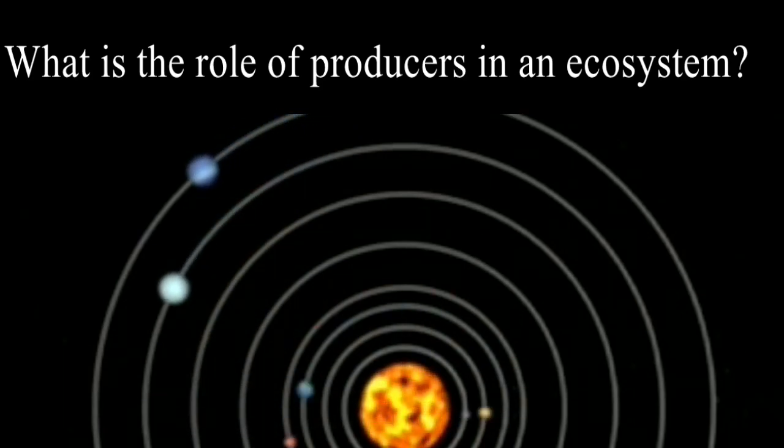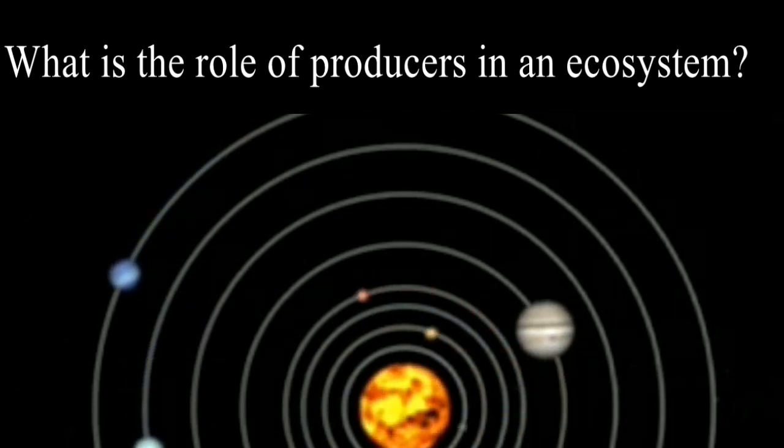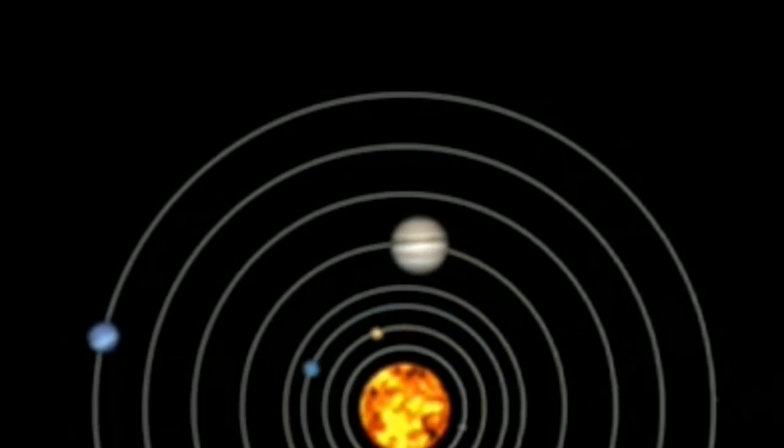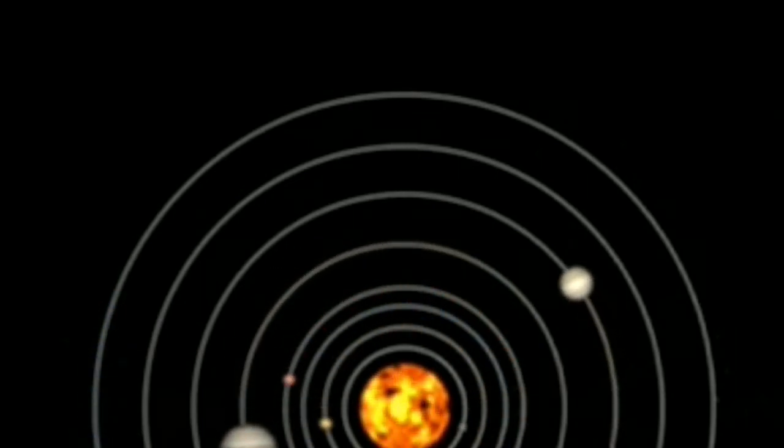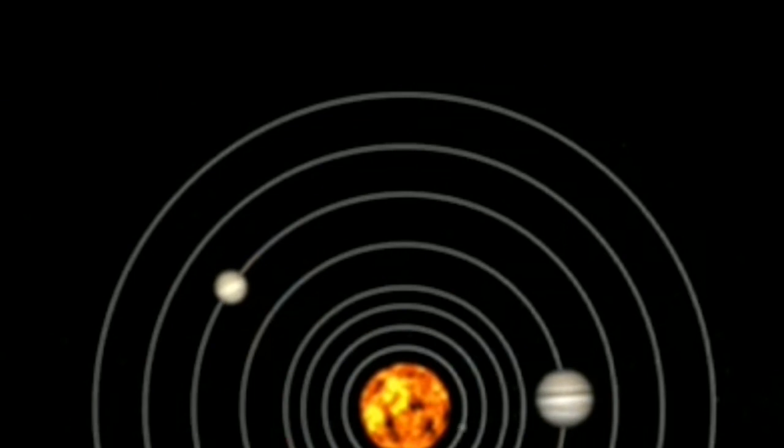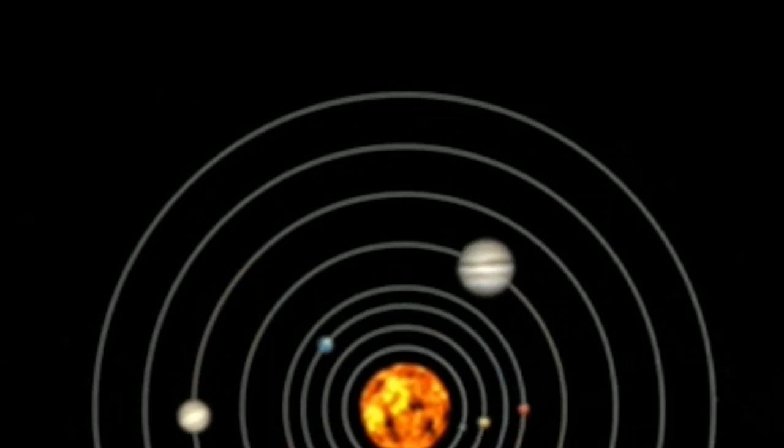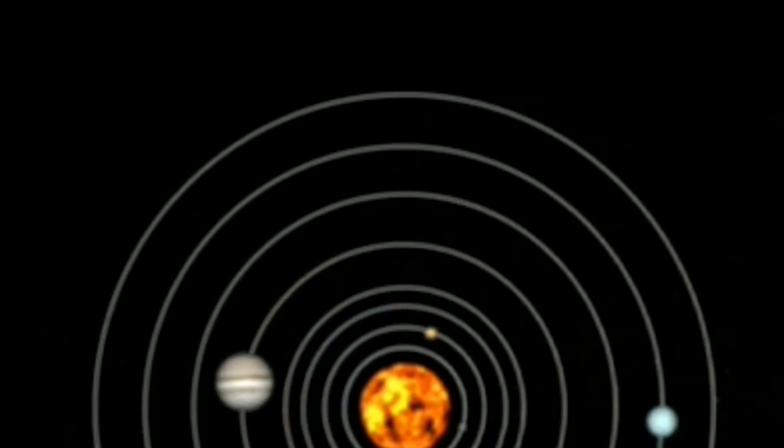What is the role of producers in an ecosystem? You should answer in that way: Producers such as plants or algae convert sunlight and nutrients into organic matter through photosynthesis. They form the base of the food chain and provide energy for all other organisms in the ecosystem.